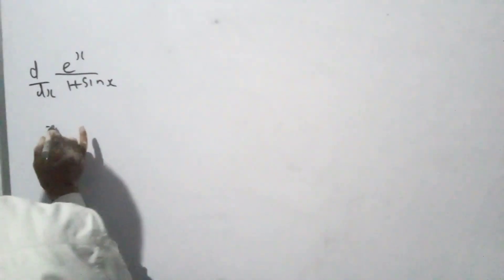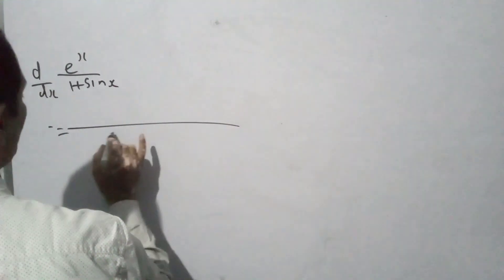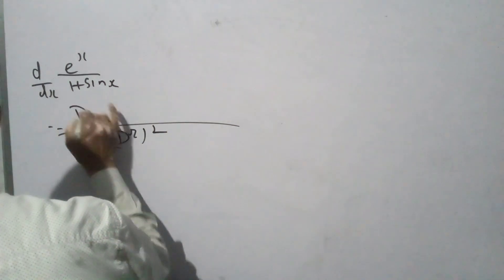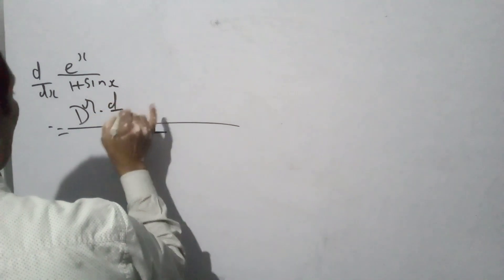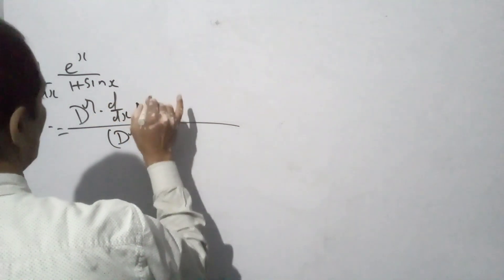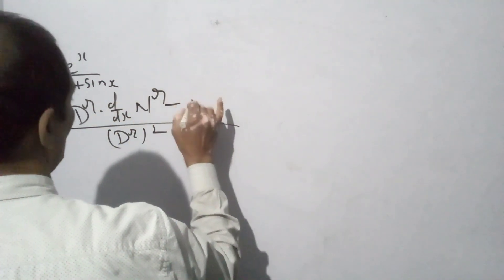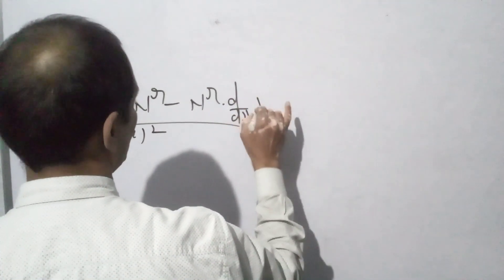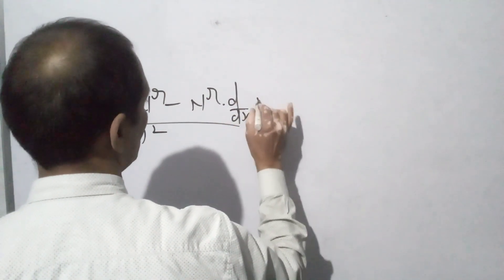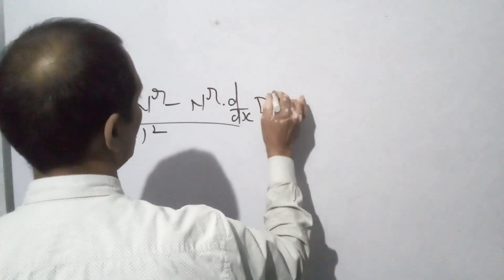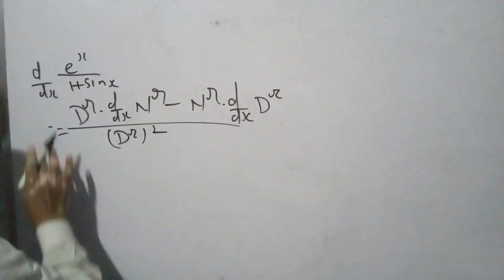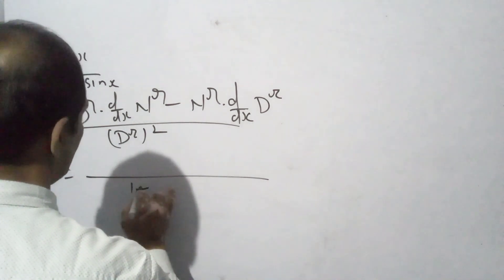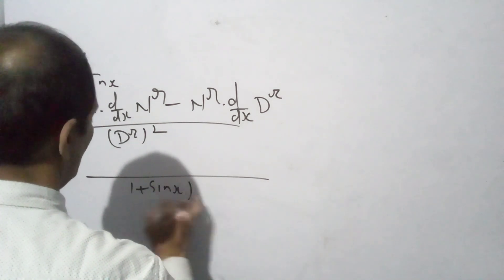Using the Quotient formula: square of denominator in the denominator. Denominator into differentiation of numerator, minus numerator into differentiation of denominator. The denominator is 1 plus sin x, 1 plus sin x whole square.